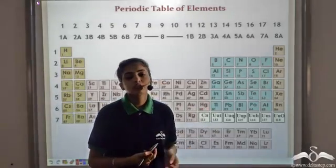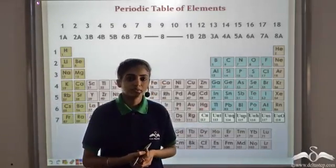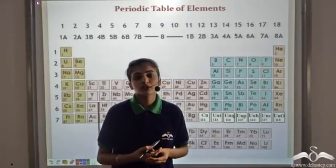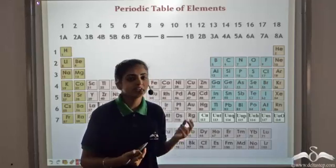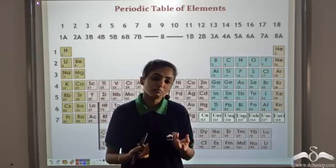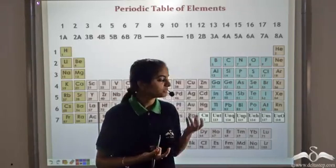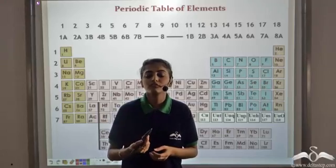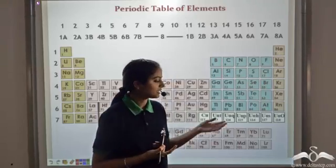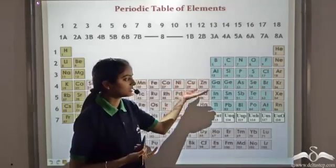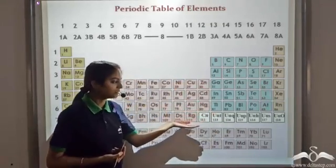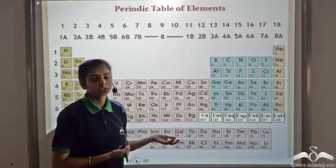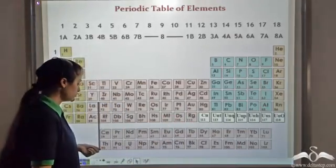This is the modern periodic table. 118 elements are arranged in the periodic table in a very systematic manner. There are some properties related to these elements which define the ways in which these elements react. Since the elements are arranged in a very well organized manner, these properties also follow some particular trends. Let's see how.